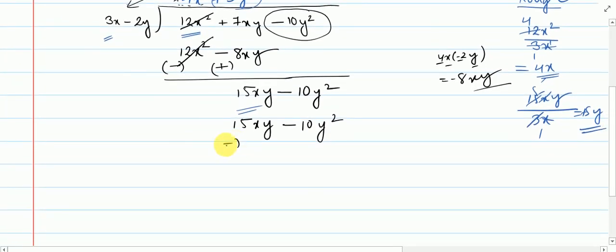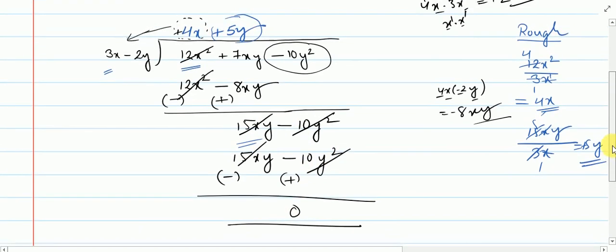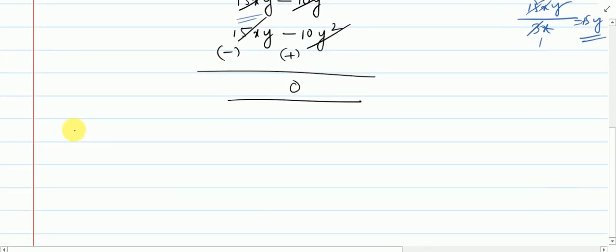Now subtract, change the sign. So here plus 15xy, here minus 15xy cancel. Here minus 10y squared, here plus 10y squared cancel. So remainder 0.